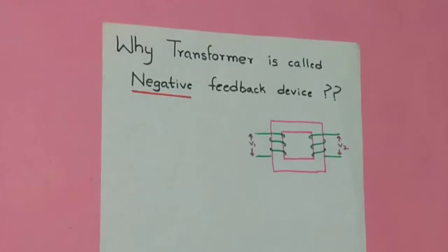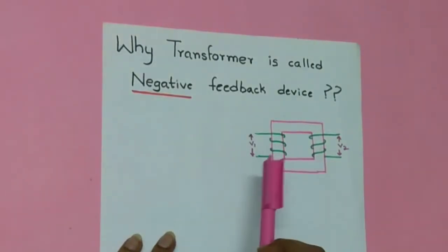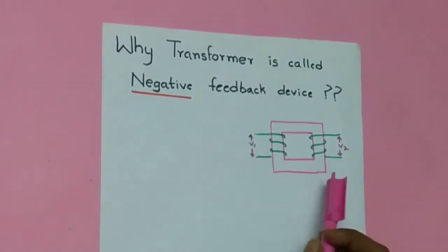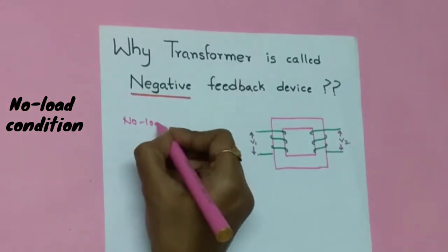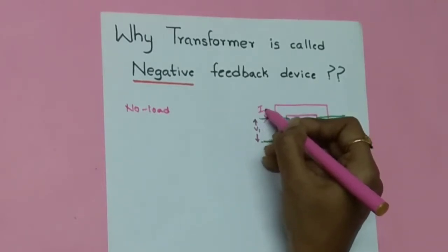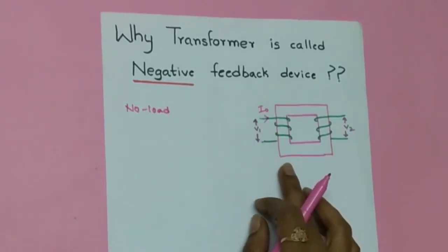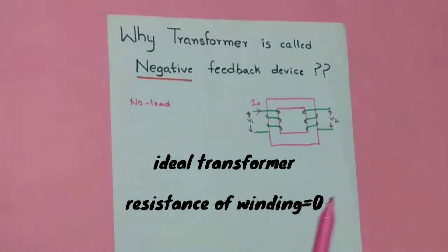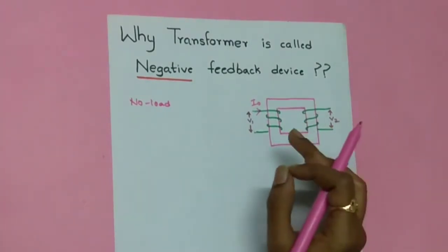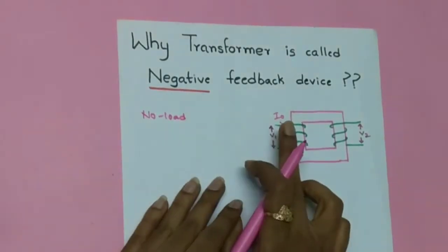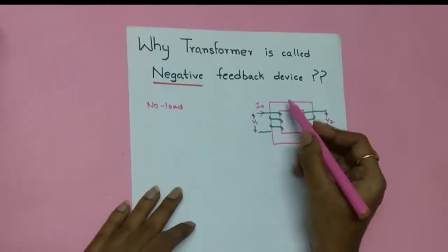Consider a two-winding transformer. I'm giving a sinusoidal voltage V1 at the primary side and not connecting any load at the secondary side — so right now considering it at no-load condition. Due to this potential difference, a current I0 flows in the primary winding. This is the no-load current. For an ideal transformer, the winding has zero resistance and is purely inductive, so I0 lags exactly 90 degrees behind V1.